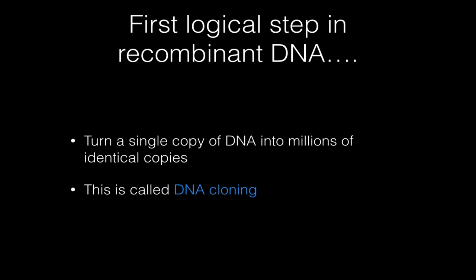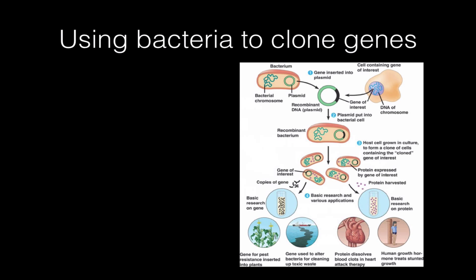The first logical step in recombinant DNA technology is you have to take the gene you're interested in and convert it into millions and millions of copies. This process is called DNA cloning, and bacteria are used to clone DNA.